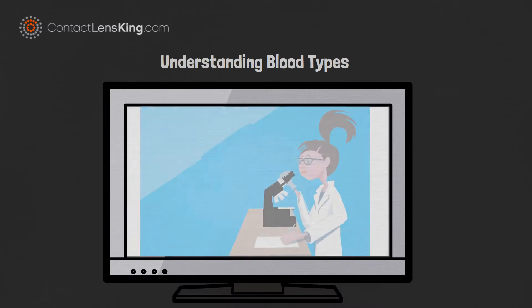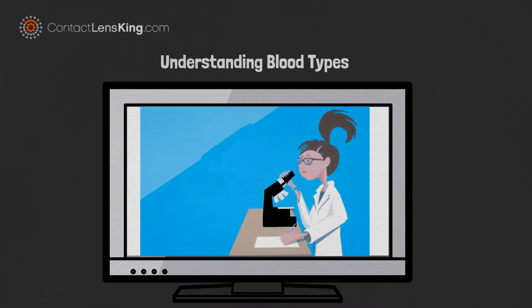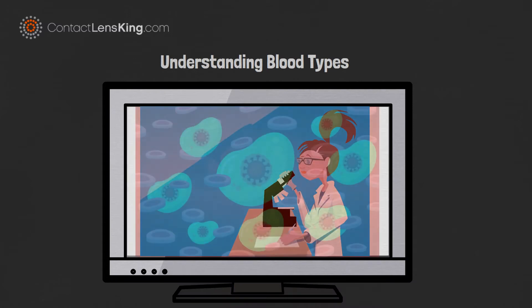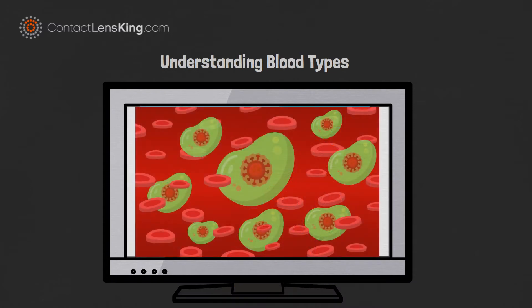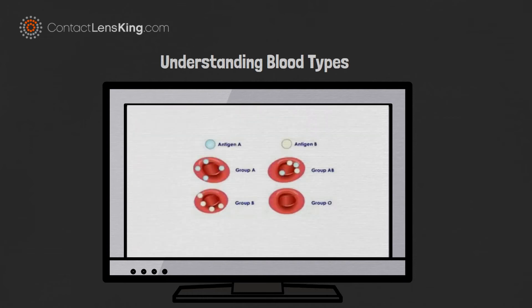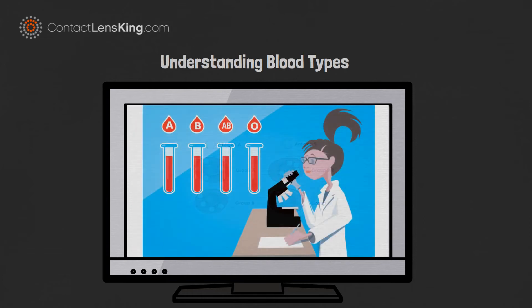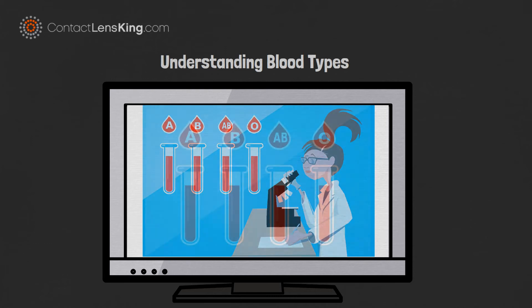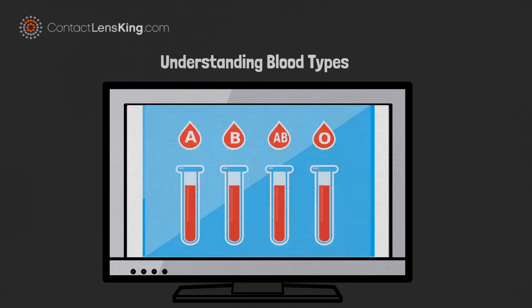Blood types are determined by a substance called antigens, which triggers an immune response to foreign bodies. The presence, or absence, of these antigens create four major blood groups: A, B, AB, and O.